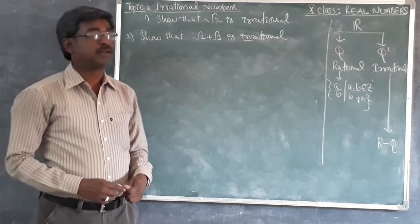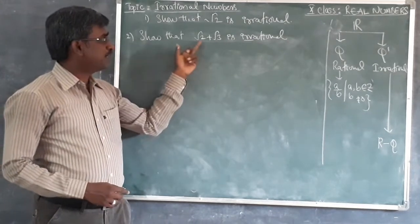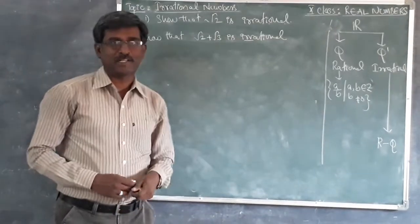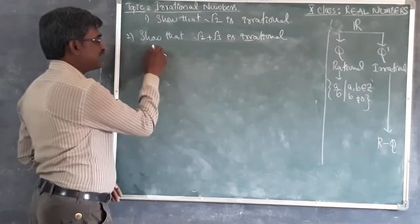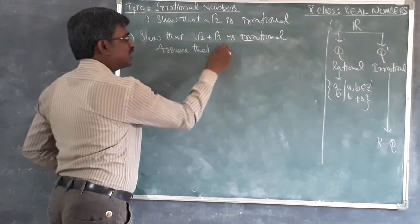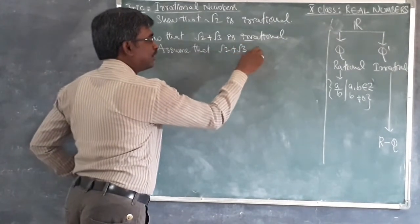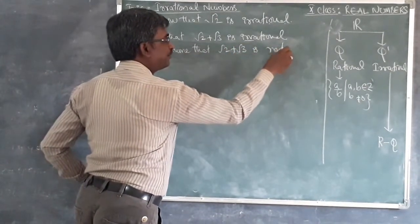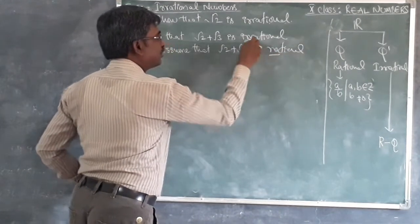Here we have another concept where root 2 plus root 3 is irrational. So here first assume that this root 2 plus root 3 is rational instead of irrational.